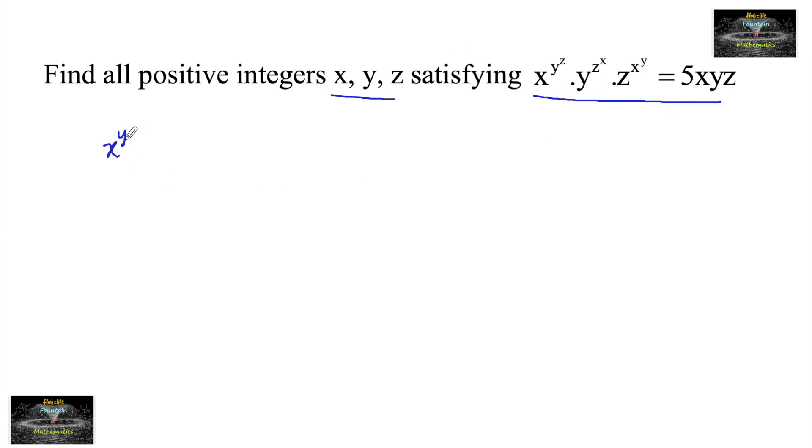So it is given x to the power of y to the power of z into y to the power of z power x into z to the power of x to the power of y is equal to 5 times xyz.